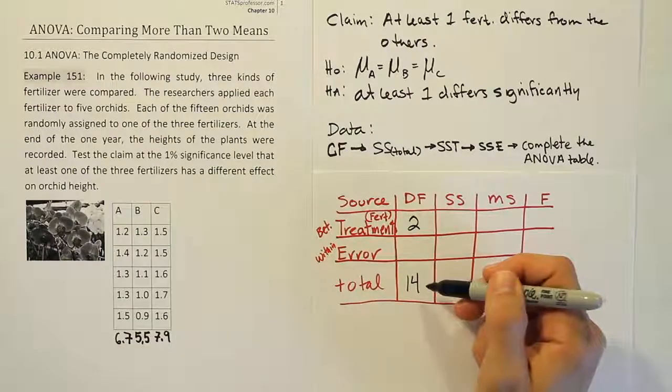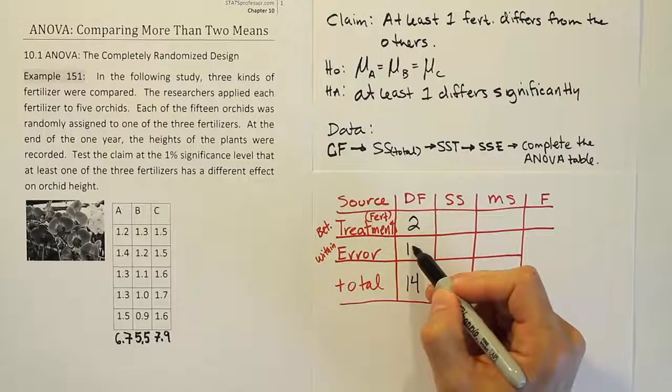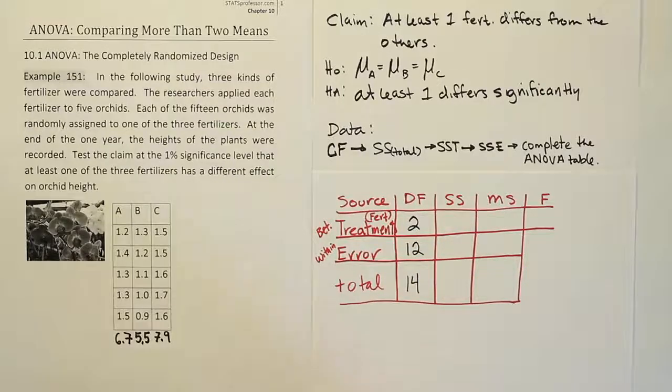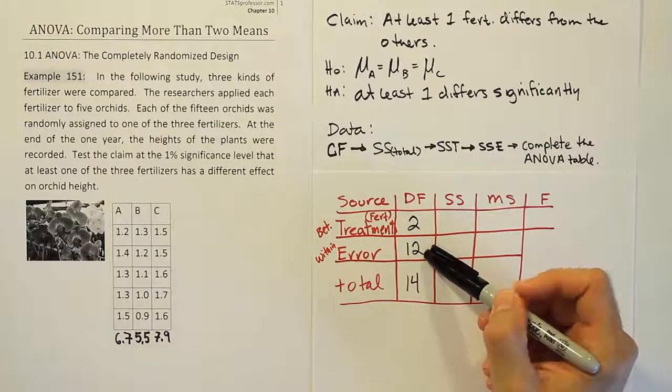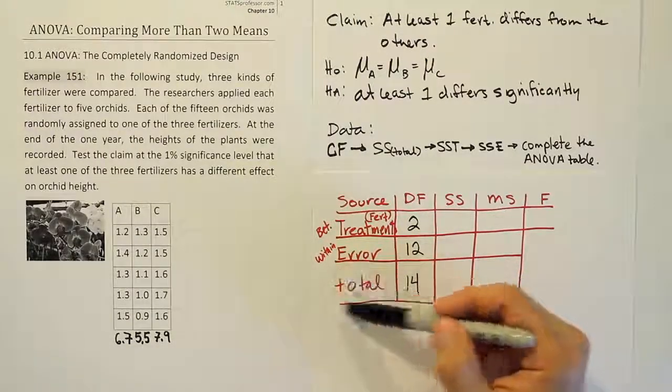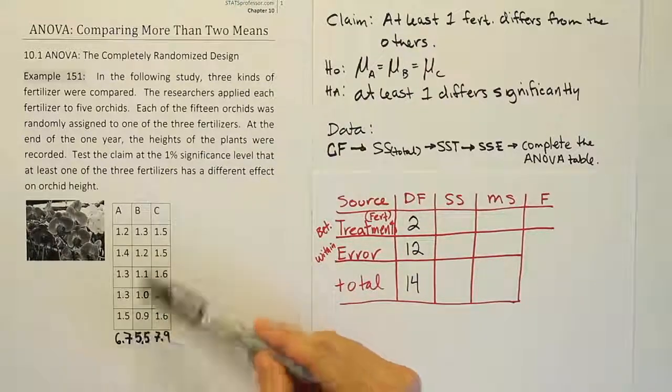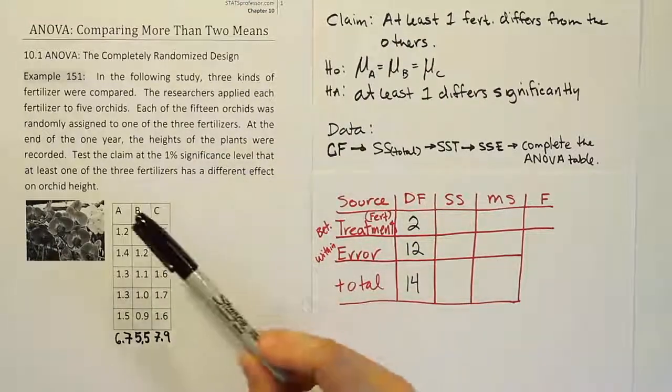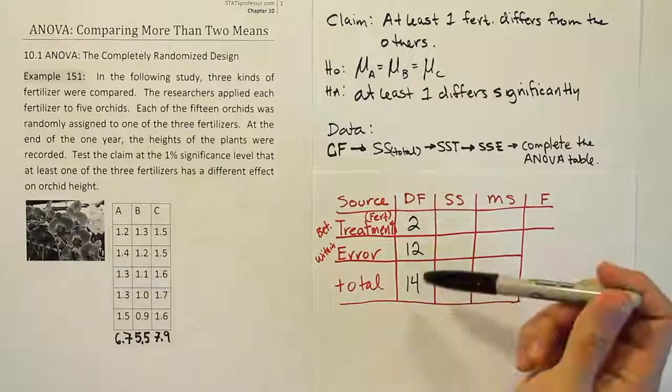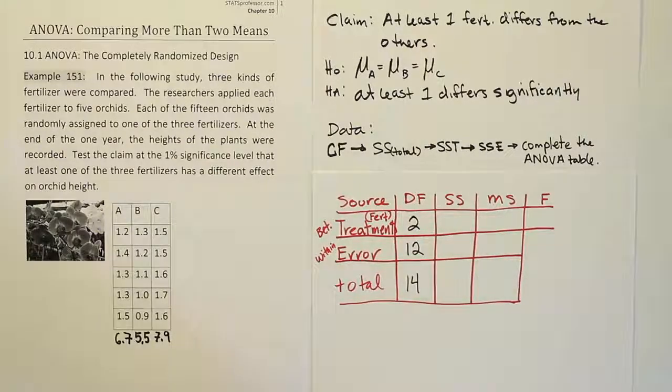Now, this and this must add up to 14. So clearly, the answer here is 12. If you want to know the formula for this, it's actually the total number of experimental units, which in this case is 15, minus the number of treatments, which is 3. 15 minus 3 will give you that same 12.